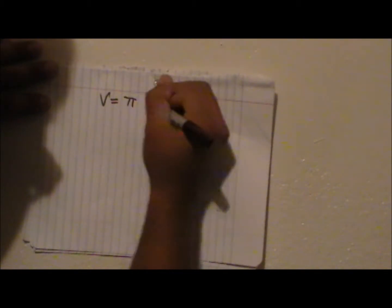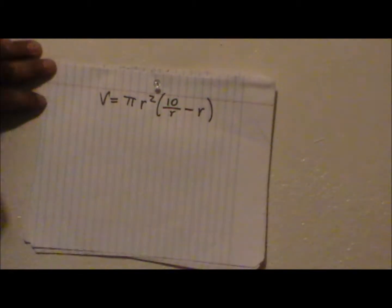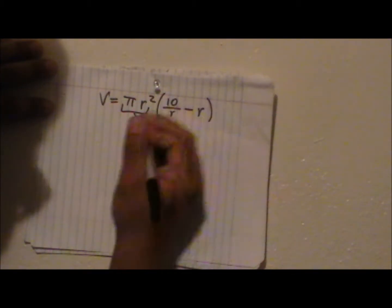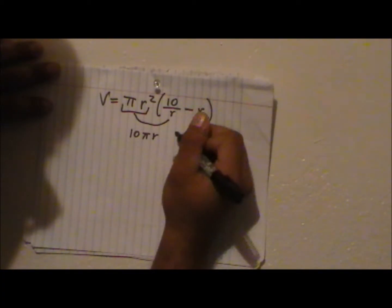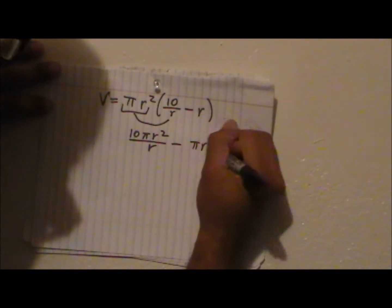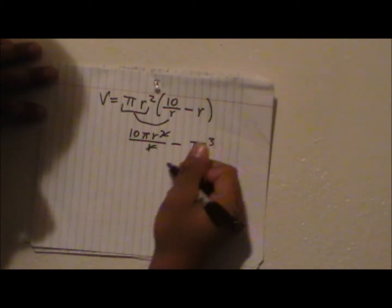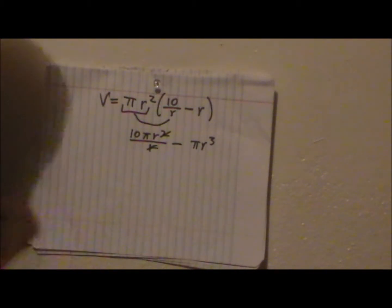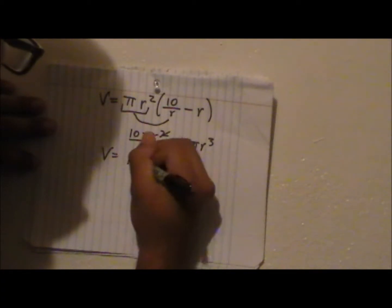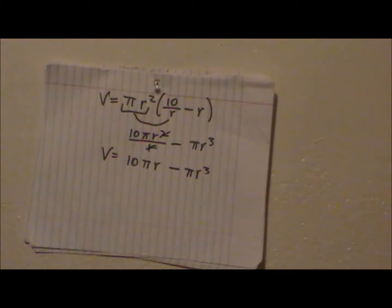Now that we know what height is in terms of r, we can go ahead and rewrite the formula of volume in terms of r. Let's go ahead and distribute. Let's go ahead and cancel.